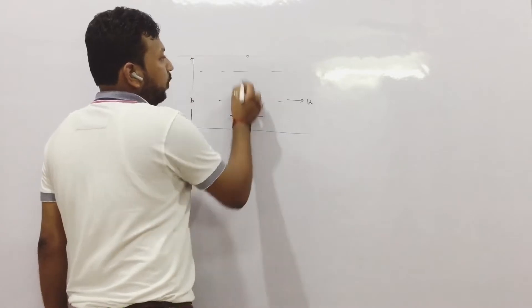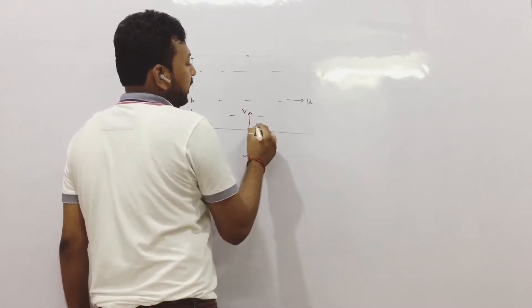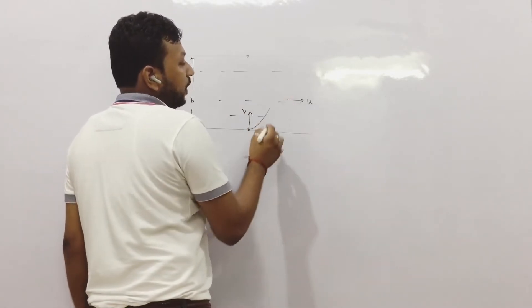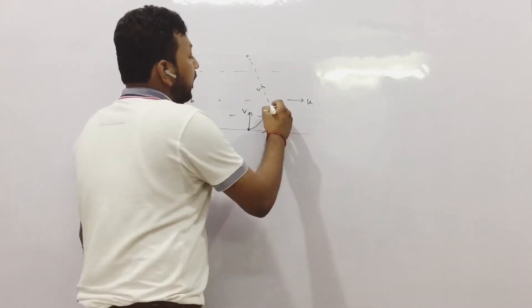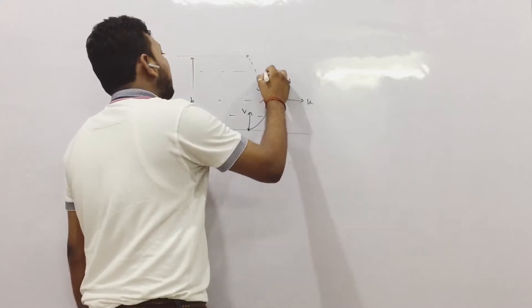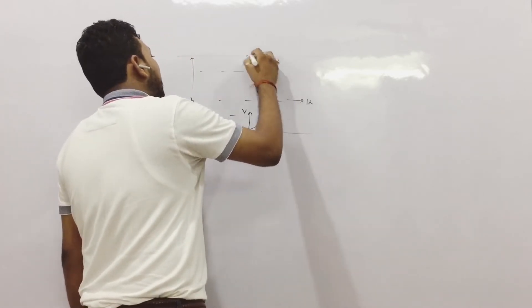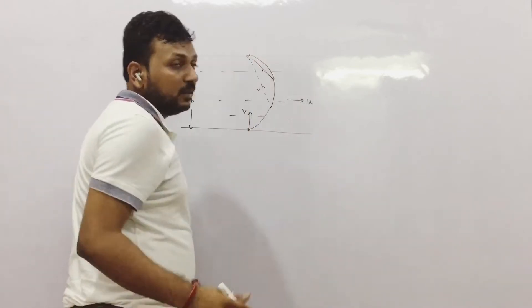So if it is pointing towards that, current is here, it will move this way. If it moves this way it will still point in this way. If it moves here it will still point to that and ultimately it will reach here. This is the theorem.